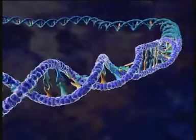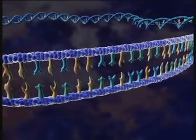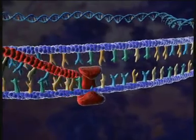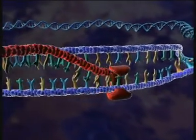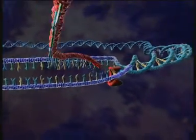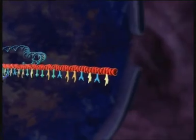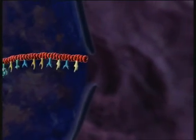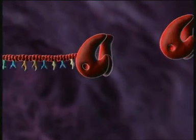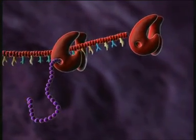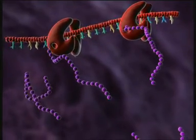Activation of the cell induces transcription of proviral DNA into messenger RNA. The viral messenger RNA migrates into the cytoplasm, where building blocks for a new virus are synthesized.